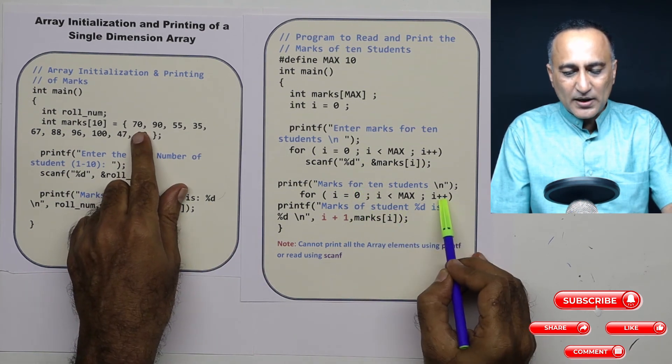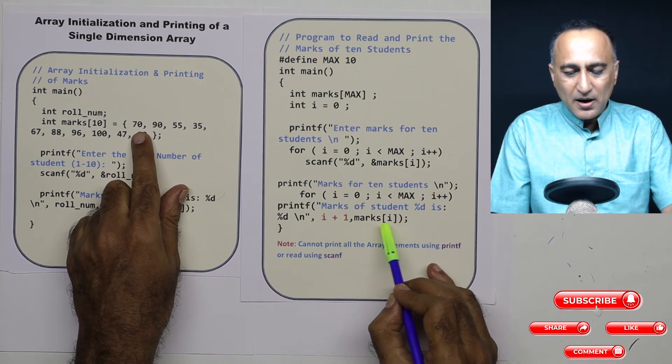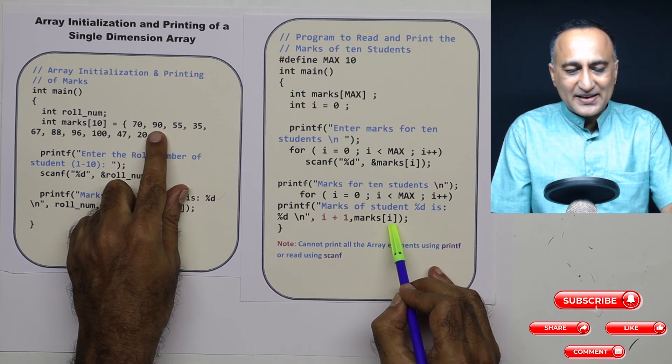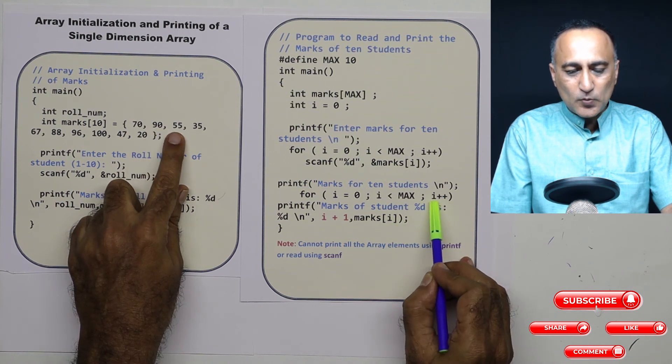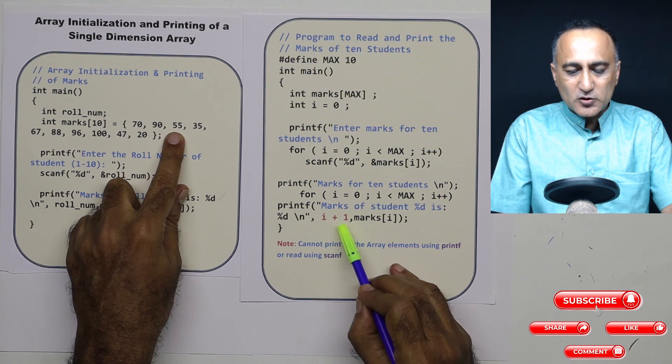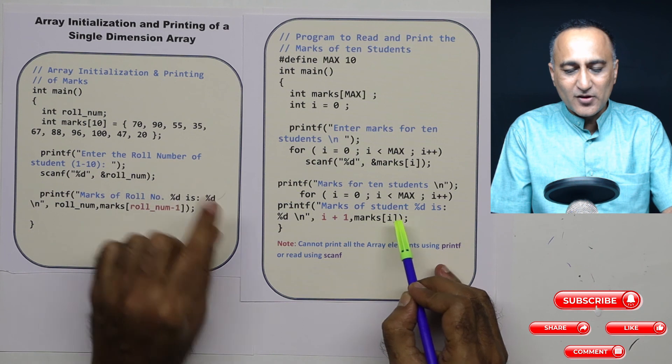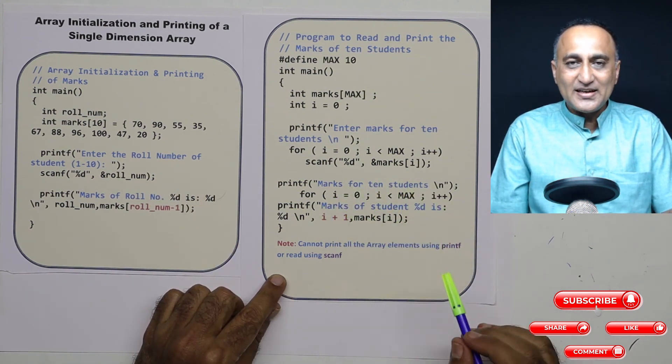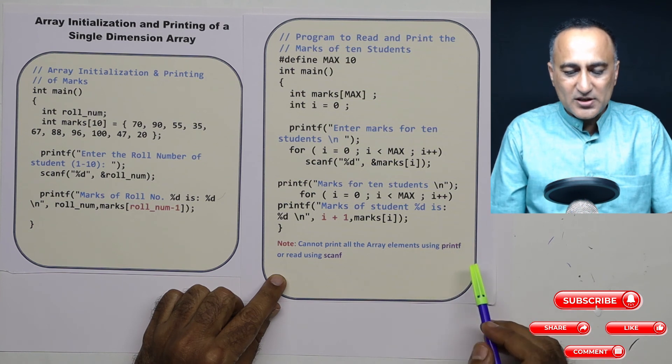i becomes 1. Then roll number 2, marks of 1. Marks of 1 is going to print 90. Then i becomes 2. When i becomes 2, 2 plus 1. So for student 3, marks of 2 is going to be 55. So this way it will continue to print the marks of all the 10 students on your output screen.